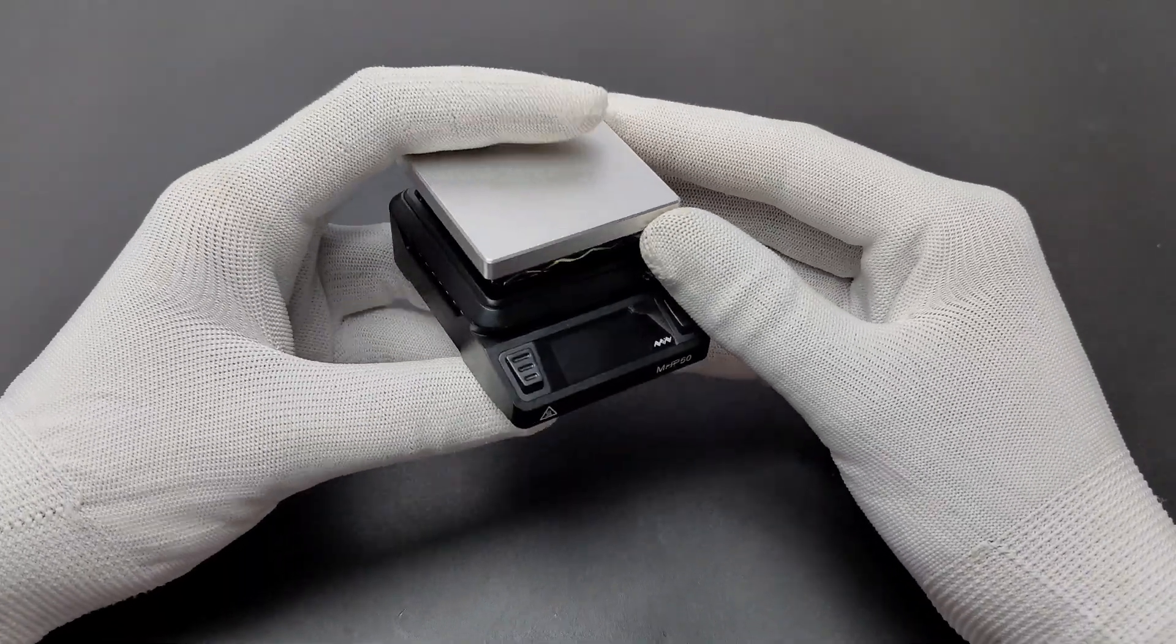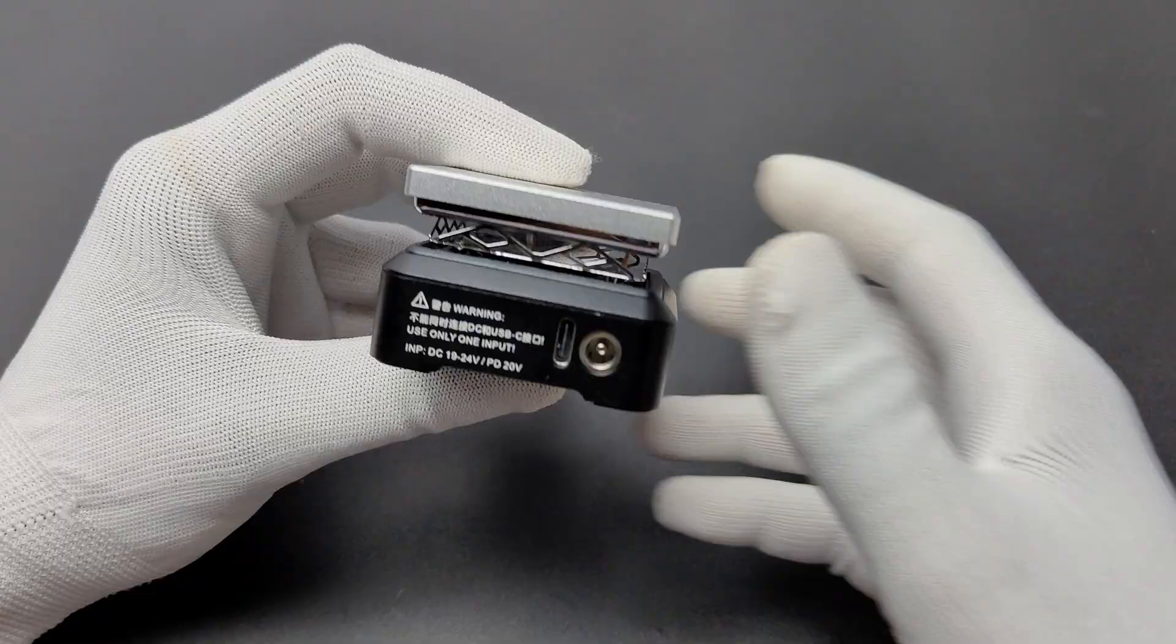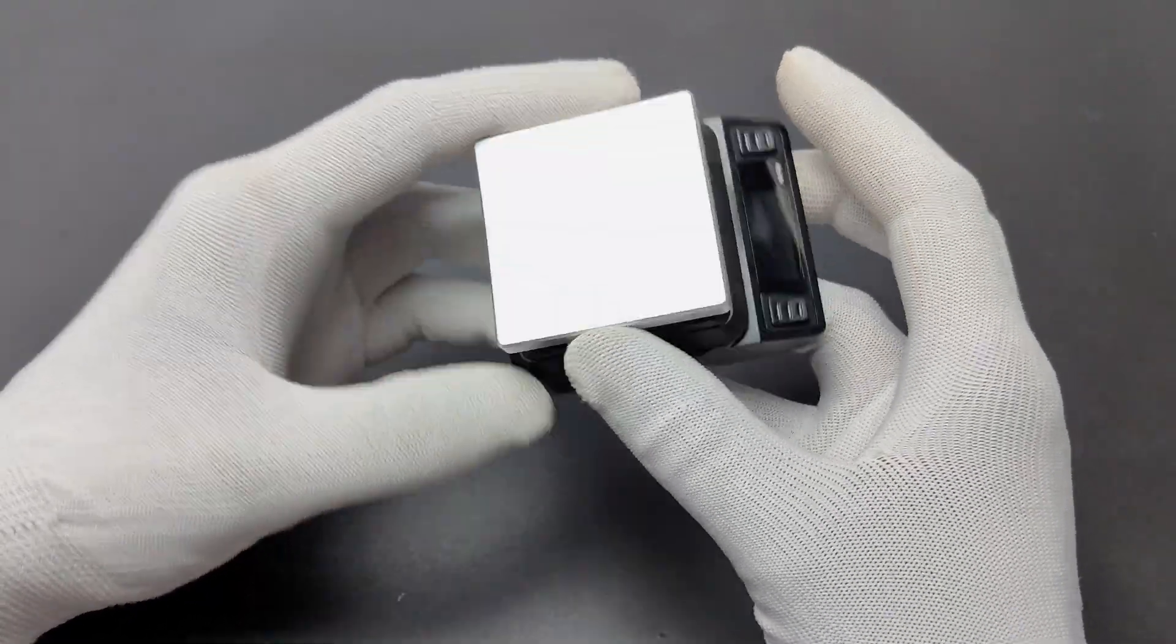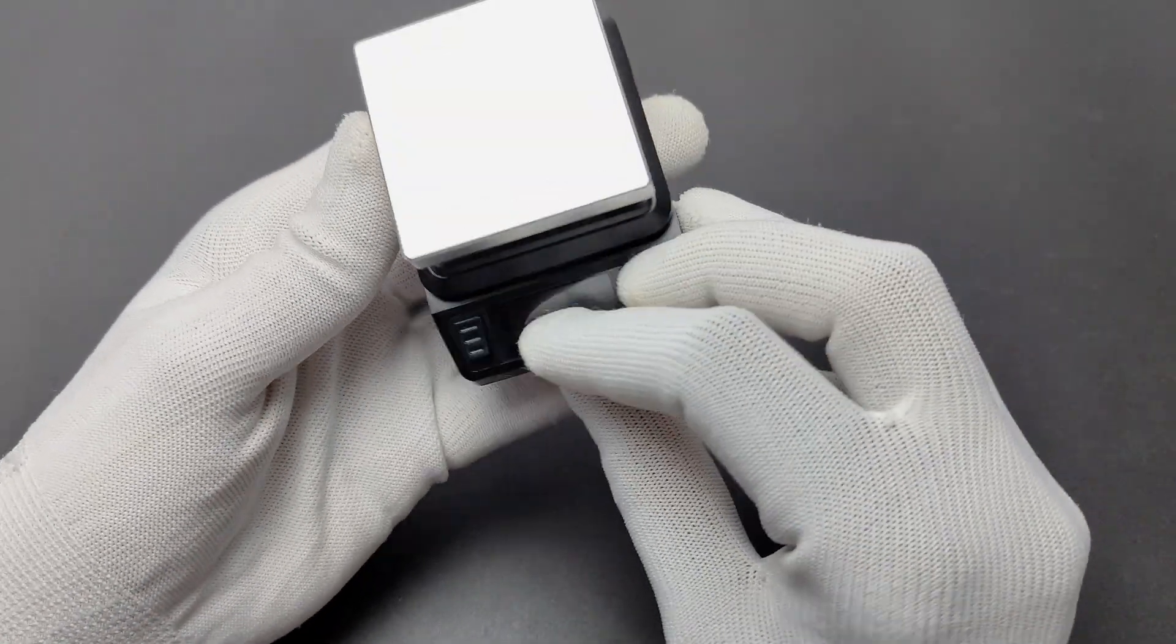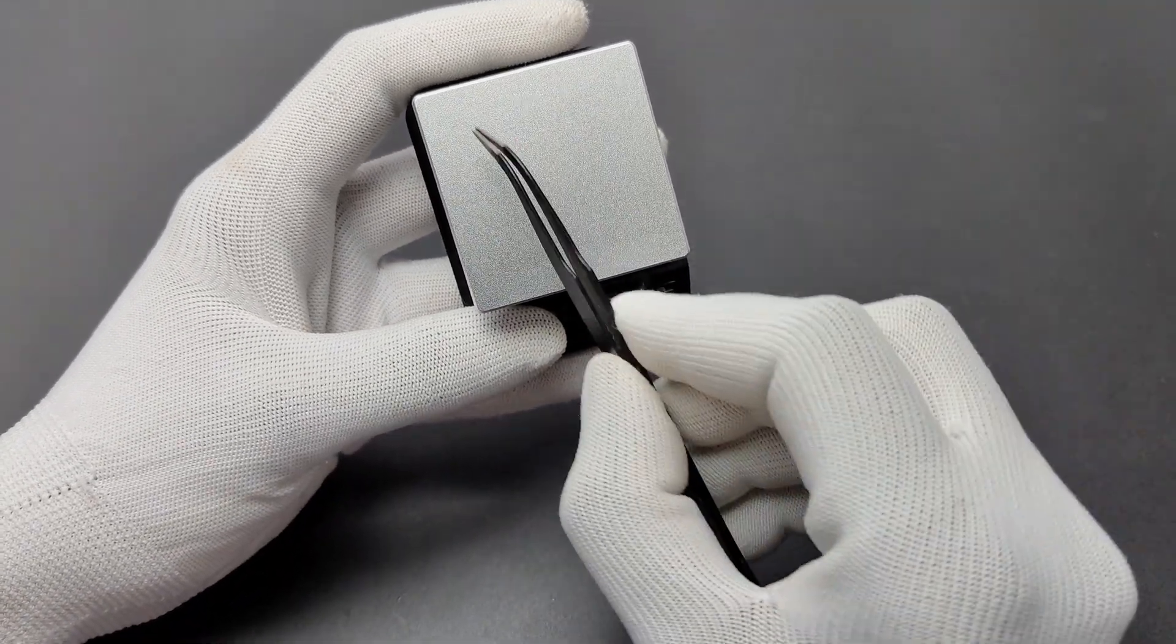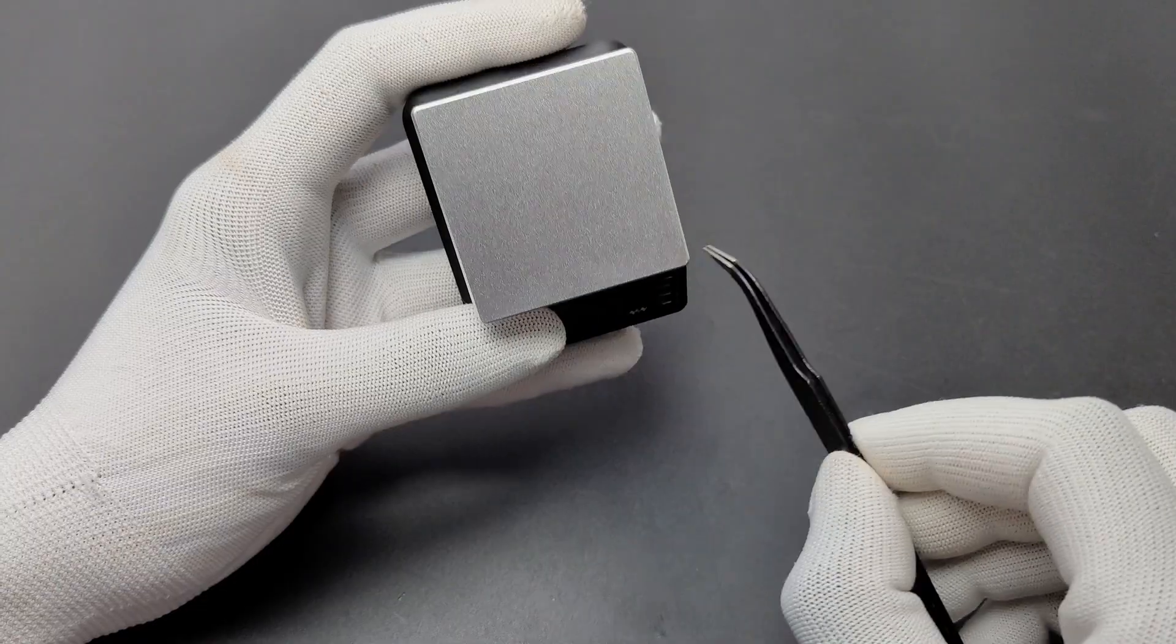The build quality feels solid and the aluminum heating surface looks durable. It's also surprisingly lightweight, which makes it perfect for portable use. So the 50 by 50 mm aluminum alloy heating surface helps to evenly distribute the heat.